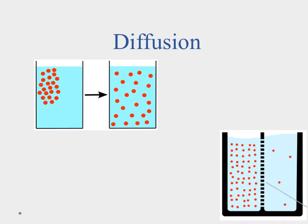Homeostasis affects the way substances move across the cell membrane — into and out of the cell. There's a passive way this happens called diffusion. Diffusion simply says that if you have a high concentration of something, it naturally wants to spread out and fill the entire space — like perfume sprayed in a corner eventually spreading throughout the room.